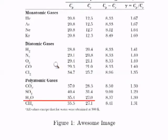And we'll look on the chart for water. Where is water? H₂O. And notice it says all values except that for water were obtained at 300 Kelvin. Why? Why is water not taken at 300 Kelvin? Because water is not a gas at 300 Kelvin.